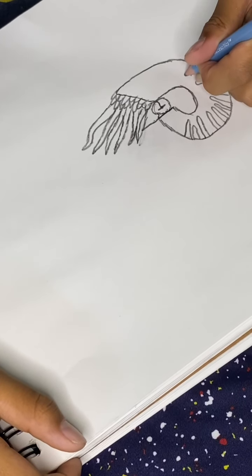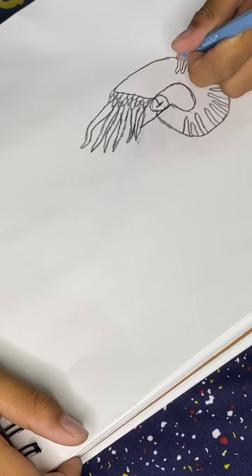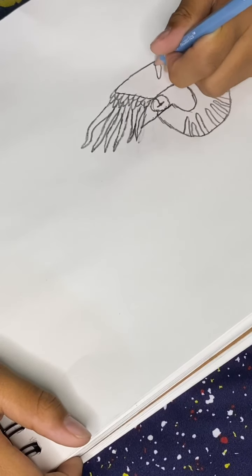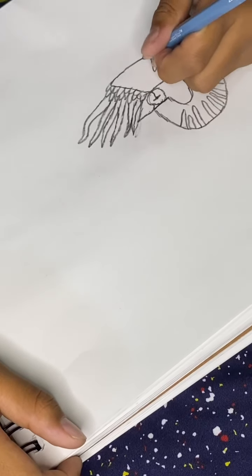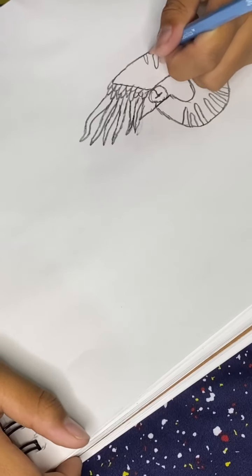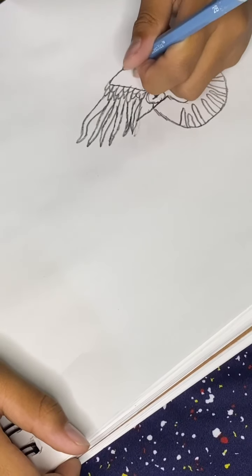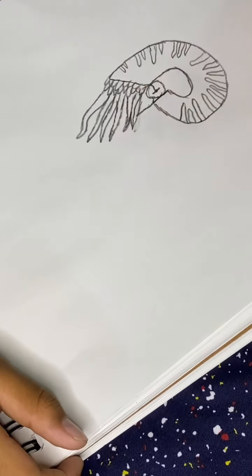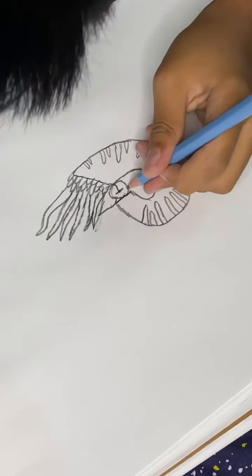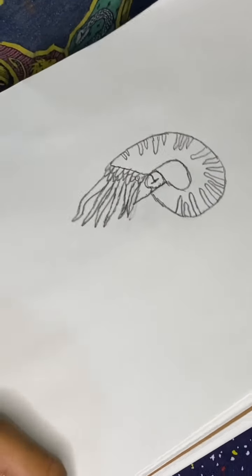Then you can start separating them, getting a little smaller. And you're done with the stripes, so you are basically done with your nautilus.